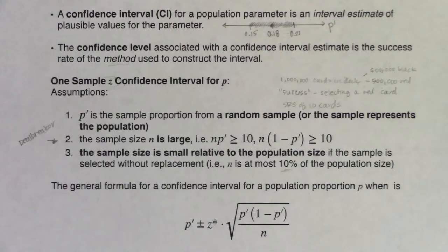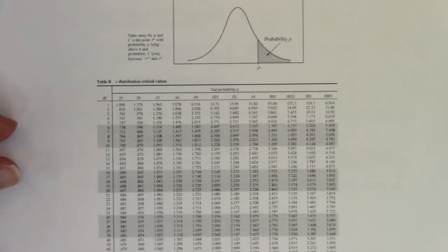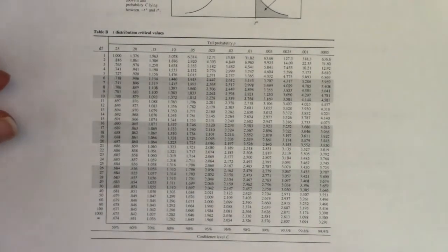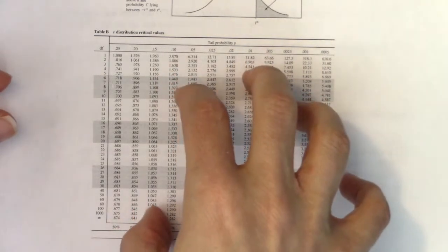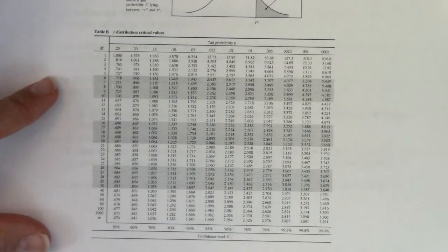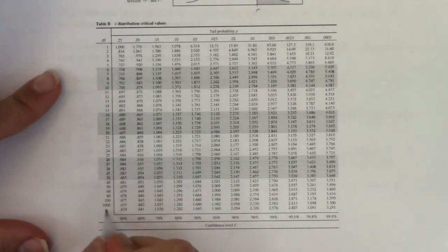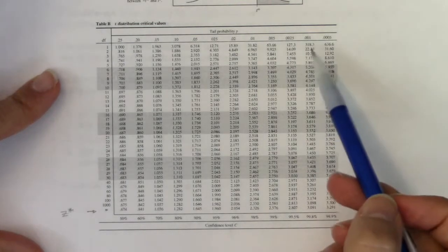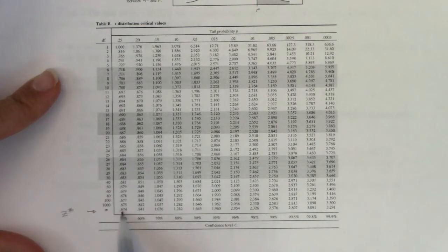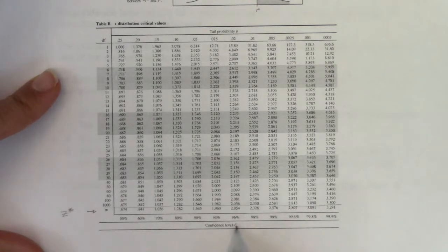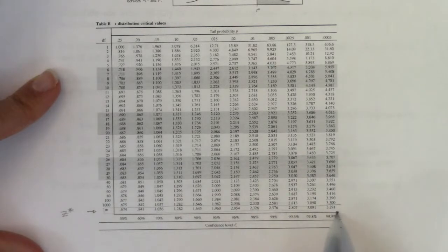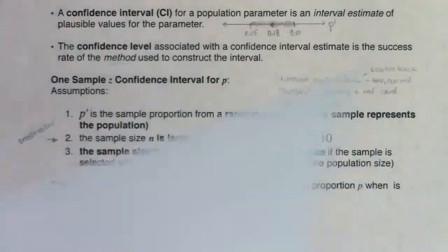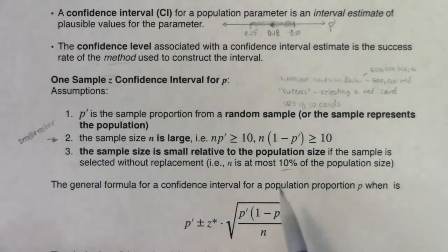The z critical value helps construct the margin of error. You'll need the critical values table, available on Canvas or printed for face-to-face students. The z* critical values are in the very bottom row of the table — the row with the infinity sign. Proportion land always uses this bottom row regardless of the confidence level listed above.